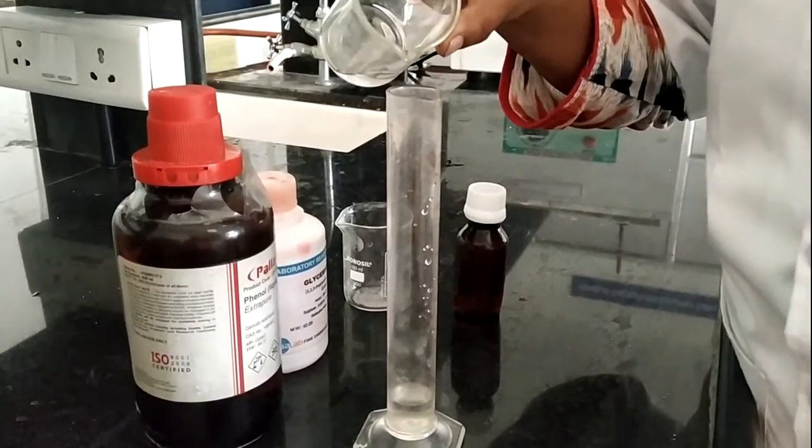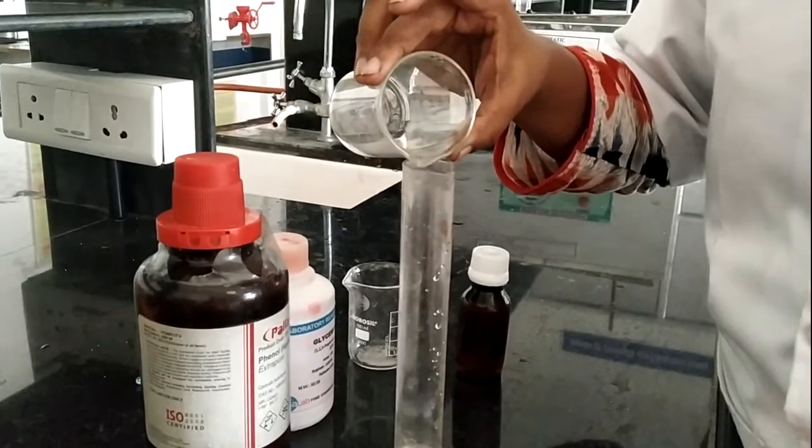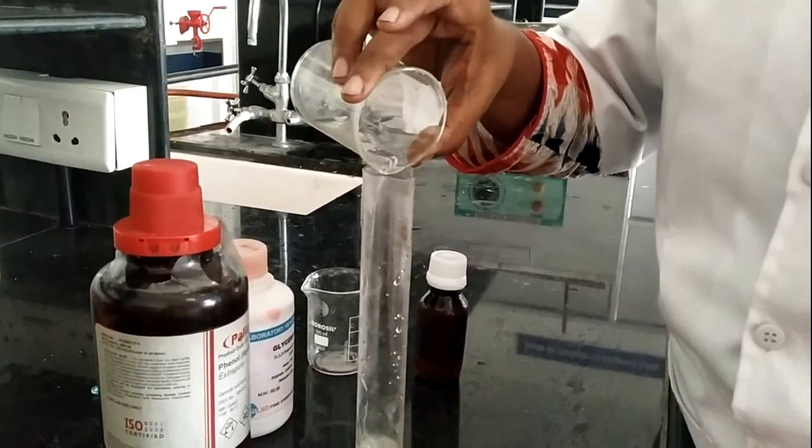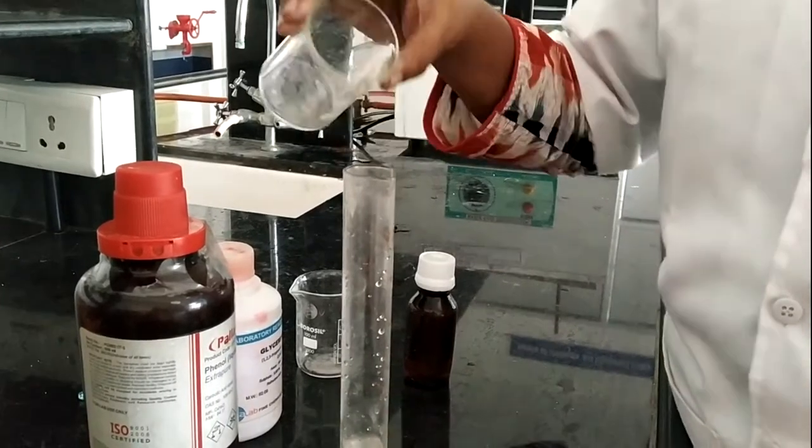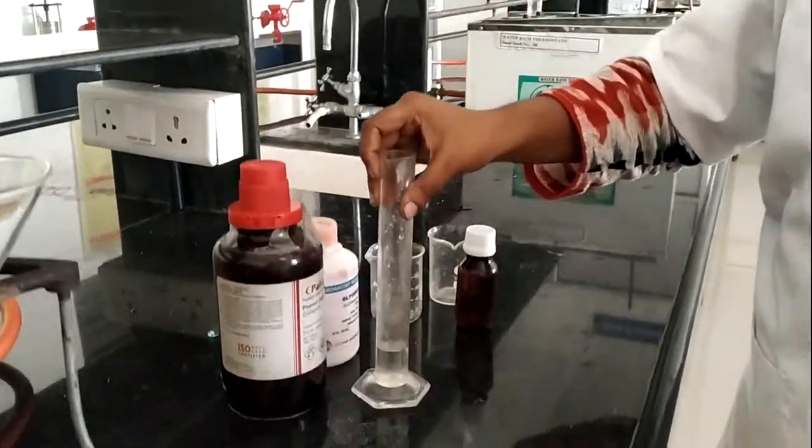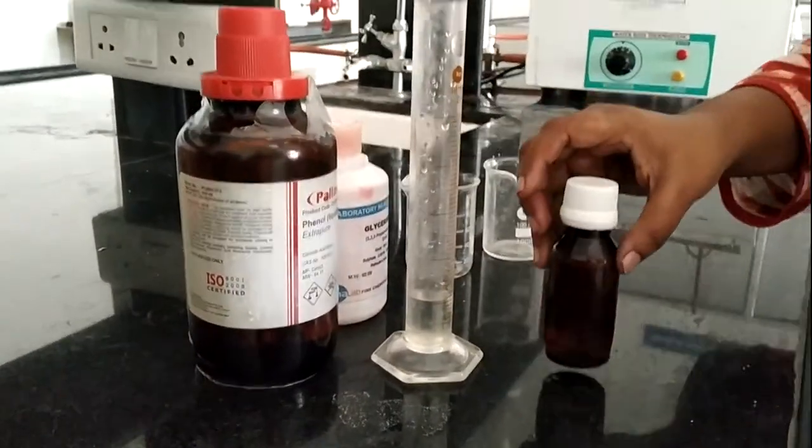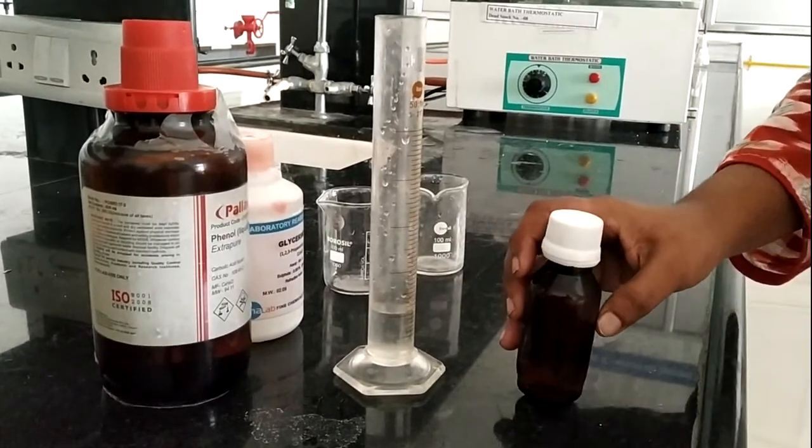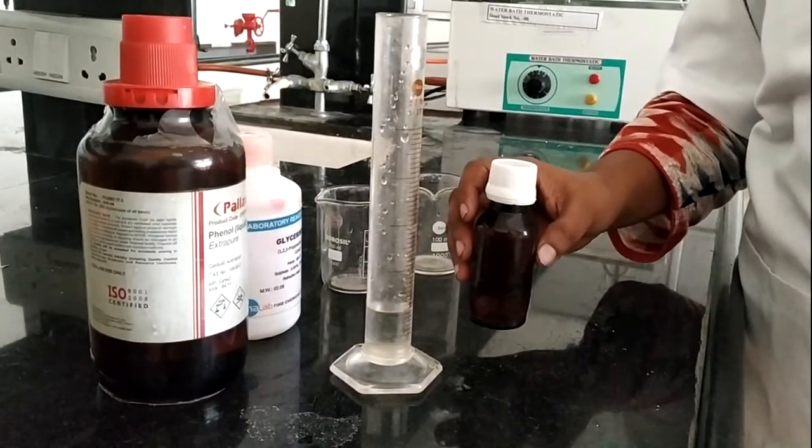After completely dissolving the phenol into the glycerine, we proceed for volume makeup in this measuring cylinder. Volume is properly made up to 10 ml. Now we will transfer our formulation into this colored fluted bottle and then proceed for the labeling part.